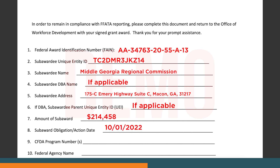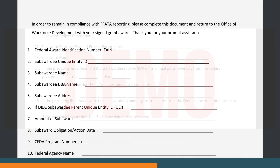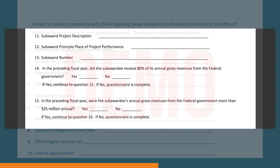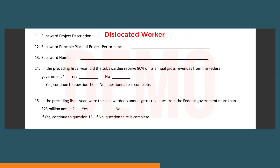Eight, subaward obligation/action date. Nine, CFDA program number. Ten, federal agency name. Eleven, subaward project description. Twelve, subaward principal place of project performance. Thirteen, subaward number.